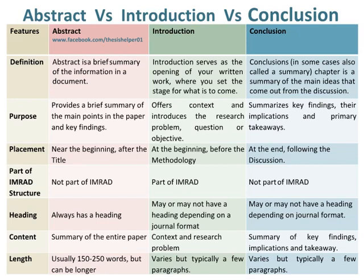Length of Abstract is usually 150 to 250 words, but can be longer. Whereas Length of Introduction varies but is typically a few paragraphs. Whereas Length of Conclusion also varies but is typically a few paragraphs.